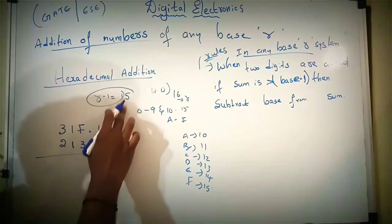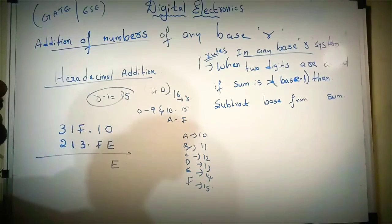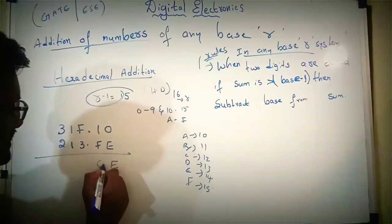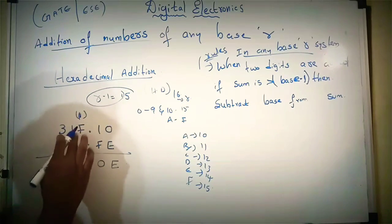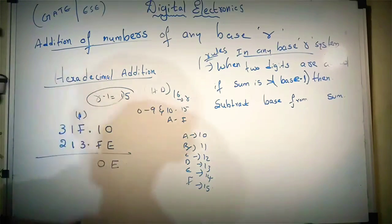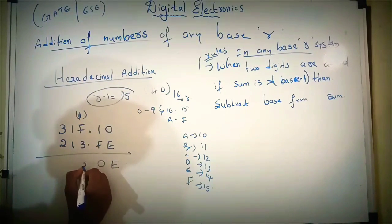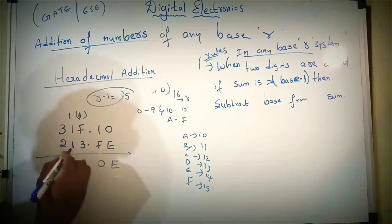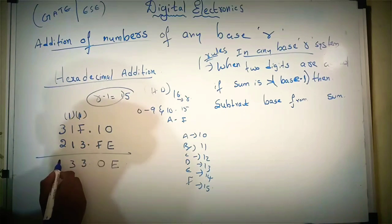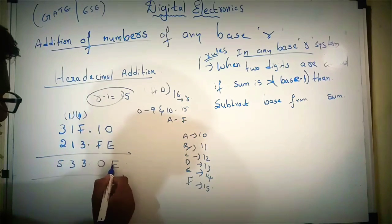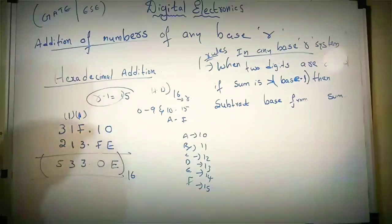F is 15, 15 plus 1 is 16. 16 is greater than 15. So subtract 16 from 16: 16 minus 16 is 0, and here we will get carry as 1. F is 15, 15 plus 1 is 16, 16 plus 3 is 19. 19 is greater than 15. So 19 minus 16 is 3, and here carry is 1. 1 plus 1 is 2, 2 plus 1 is 3. 3 is not greater than 15. Next 3 plus 2 is 5. This is the hexadecimal equivalent value of the addition of two hexadecimal numbers.